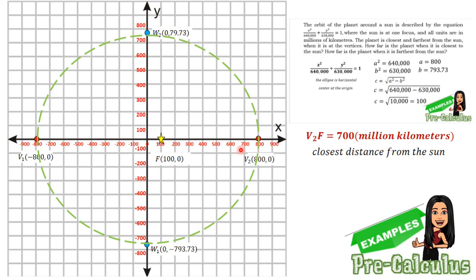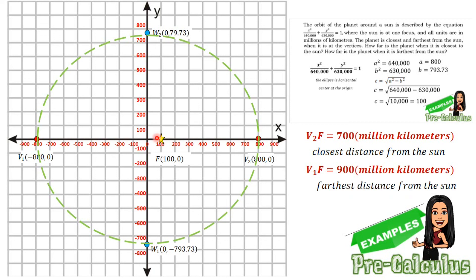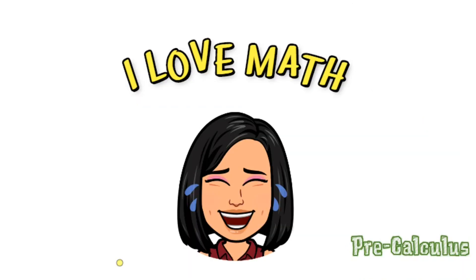The distance from vertex 1 to the focus is the farthest. Counting: 1, 2, 3, 4, 5, 6, 7, 8, 9 — 900 million kilometers, which is the farthest distance of our planet from the sun. That answers our problem number 2. I hope you learned something. Thank you for watching. See you again in our next video.